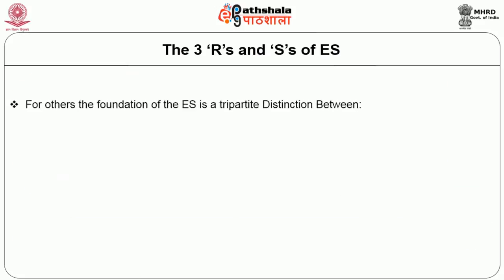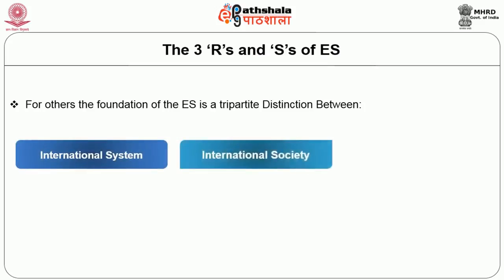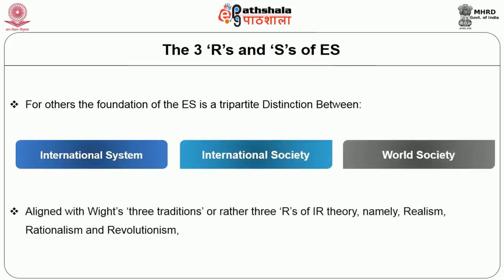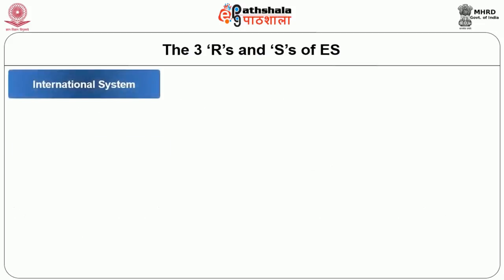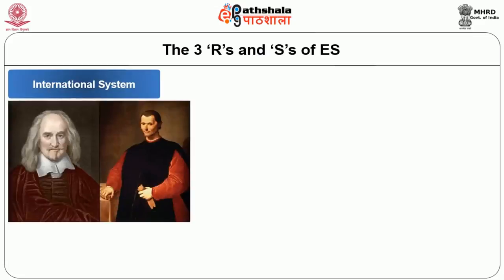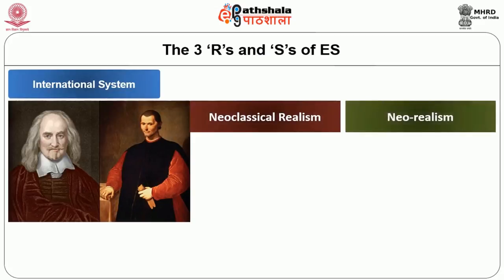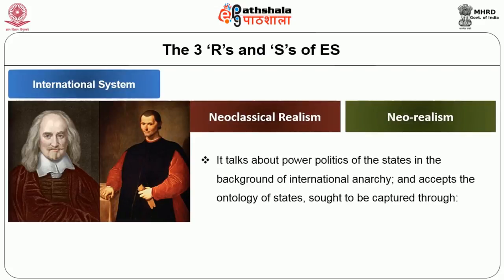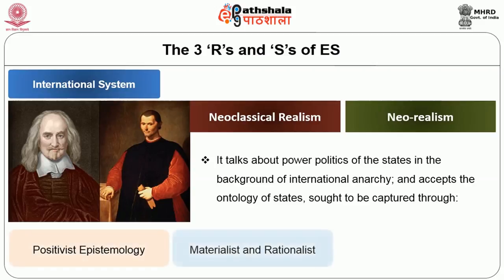For others, the foundation of the English school is a tripartite distinction between international system, international society and world society, aligned with White's three traditions — or rather three R's of IR theory — namely realism, rationalism and revolutionism. International system, associated with Hobbes and Machiavelli, runs broadly parallel to neoclassical realism and neorealism, talks about power politics of states in the background of international anarchy, and accepts the ontology of states sought to be captured through positivist epistemology, materialistic and rationalist methodologies and structural theories.